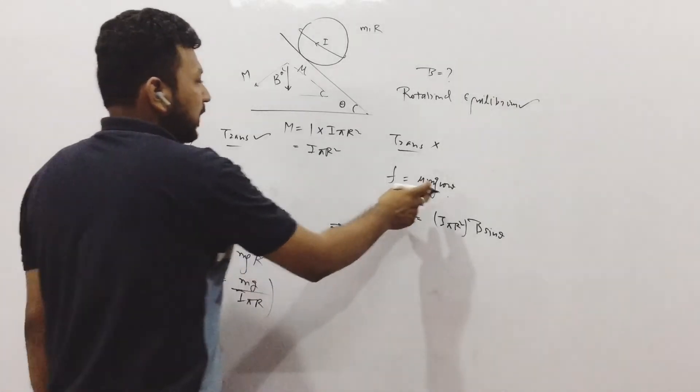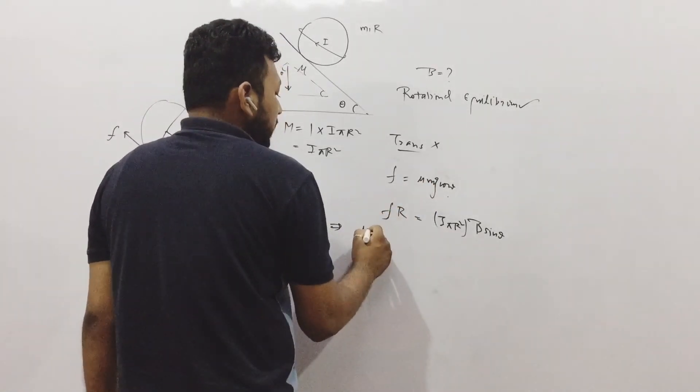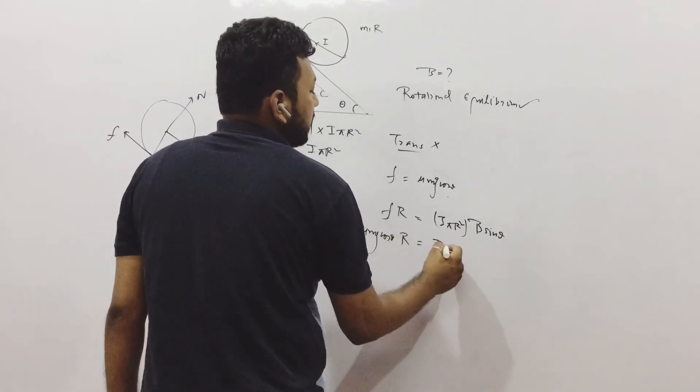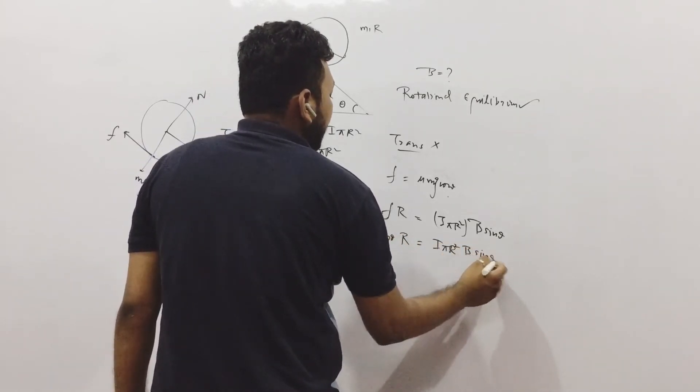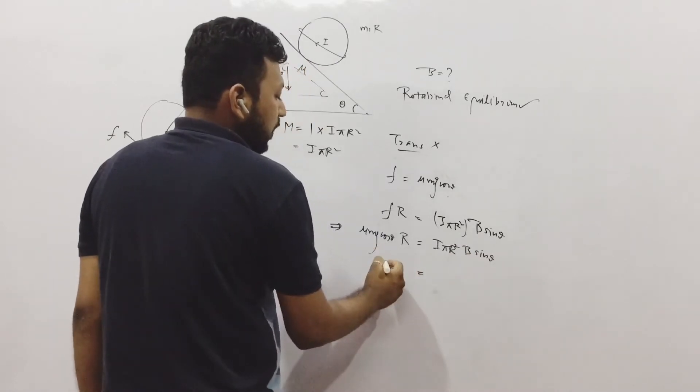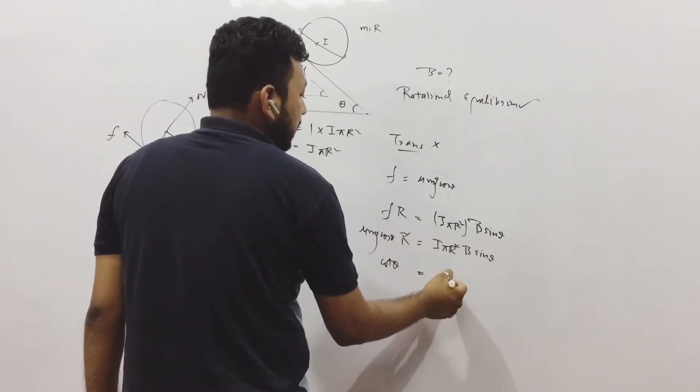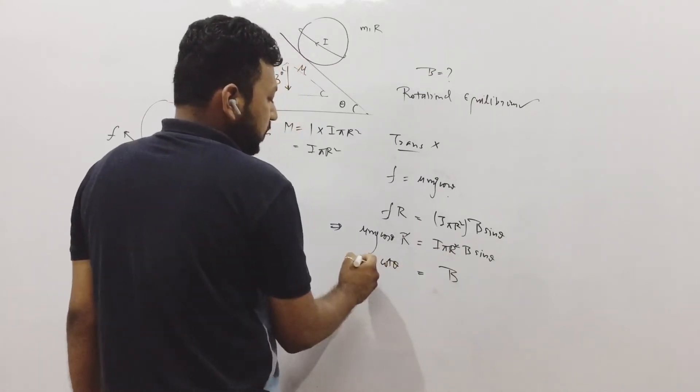M cross B. So how much is that? It is mu Mg cos theta into R, is equal to I pi R square B sin theta. It comes down, it becomes cos theta. One R gets cancelled, then B becomes mu Mg cos theta upon I R.